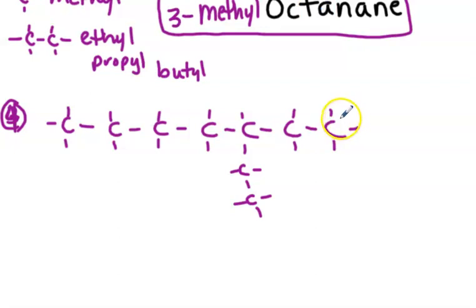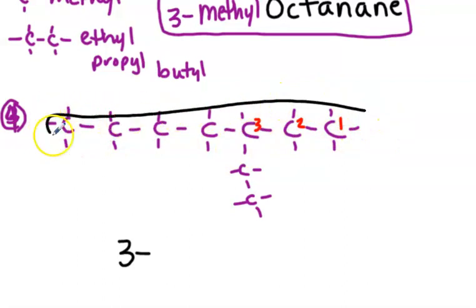Okay, so just a reminder, you want your number in front of your ethyl in your name here. You want it to be the smallest number, so figure out which way you have to count. Go ahead and pause it and name this one. Okay, I'm going to start counting on this side. One, two, three, so this is located on number three. If I would have started counting from the other side, it would have been one, two, three, four, five. You want the smallest number in front of it, so it's going to be a three dash. Remember, there's always dashes between numbers and letters.